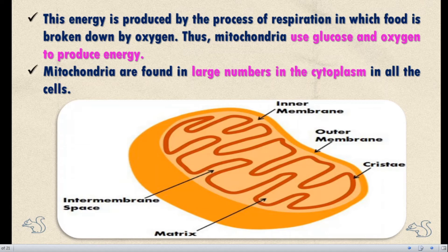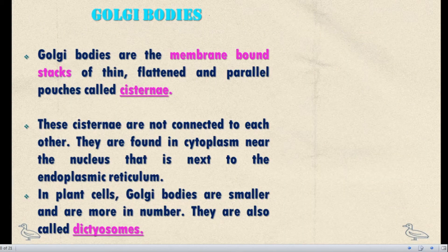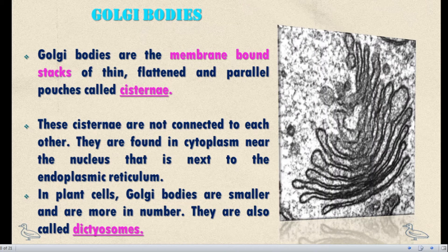Mitochondria has an inner membrane, outer membrane, cristae, intermembrane space, and matrix as its main structural parts.